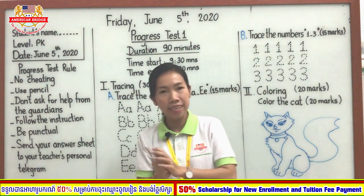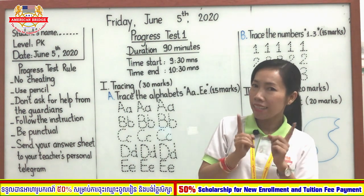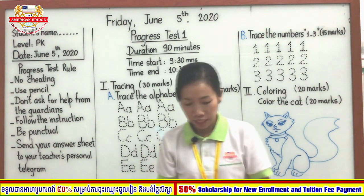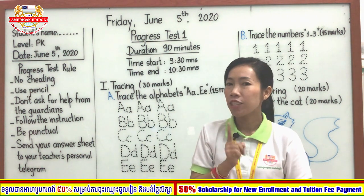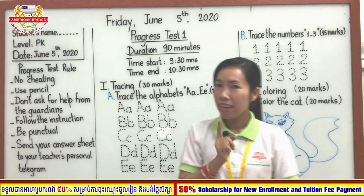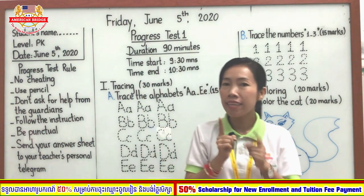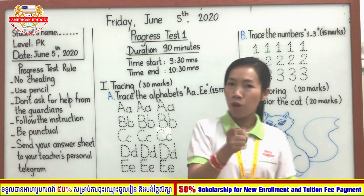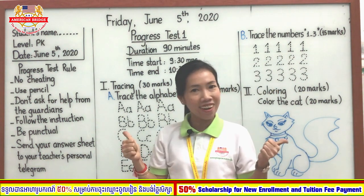A, B, C, D, E, F, G, H, I, J, K, L, M, N, O, P, Q, R, S, T, U, V, W, X, Y, Z. Now I know my ABCs. Next time, won't you sing with me? ABC song.